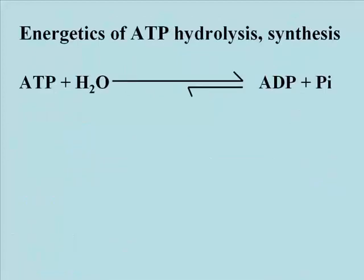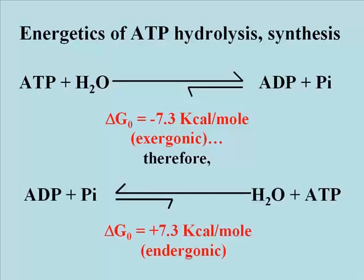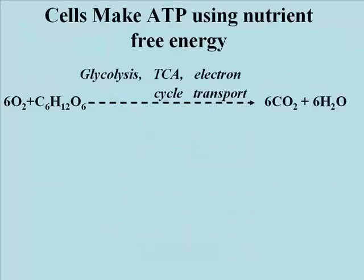Now let's recall just how much free energy is available from ATP. ATP hydrolysis is very exergonic. The standard free energy change, delta G°, is equal to minus 7.3 kilocalories per mole of ATP hydrolyzed. The dehydration synthesis of ATP is therefore highly endergonic, to the tune of plus 7.3 kilocalories per mole. The free energy needed to do this reaction comes from the fermentation or respiration of nutrient molecules like glucose.